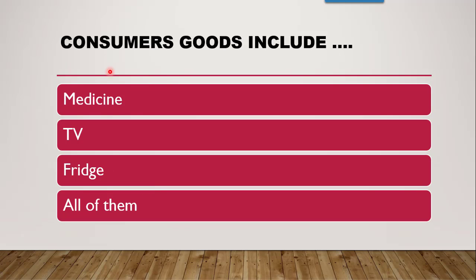The next question is: consumer goods include — whether it is medicine, TV, fridge, or all of them. The correct answer is all of them, because consumer goods are those goods which are ready to be used directly by consumers. Tablets and capsules are dosage forms which come under medicine and can be directly consumed. TV and fridge can also be directly utilized by the consumer. So the correct answer is all of them.